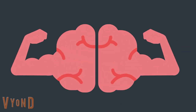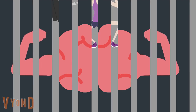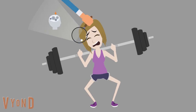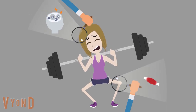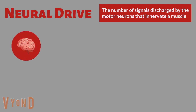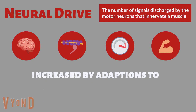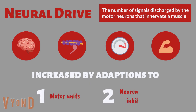Since muscles are activated by neurons, the brain is equally as important as the muscles when it comes to strength. When we lift heavier loads, many neural adaptations occur to increase the neural drive to that muscle. Neural drive is defined as the number of signals discharged by motor neurons that innervate that muscle. Simply put, more signals discharged results in more power strokes, which equates to a larger contraction force and thus the ability to lift heavier loads and therefore a stronger muscle. Increased neural drive is caused by adaptations to motor units and neuromuscular inhibition.